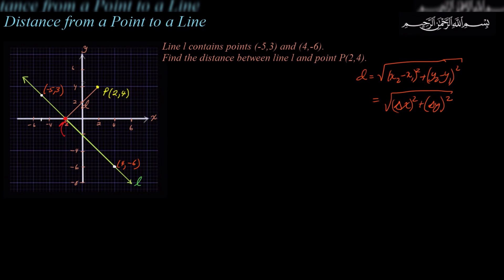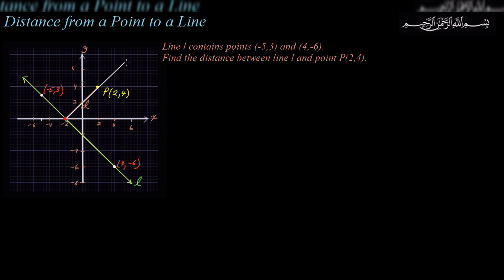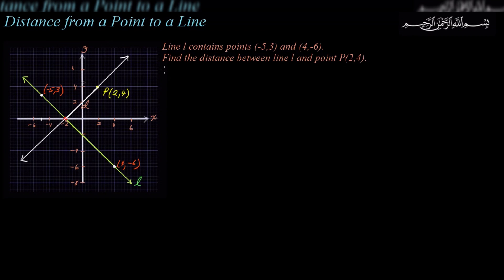That's good, but we don't know what that intersection point is. So what we're going to do is find the equation of the line that contains point P and this point of intersection. We'll find the equation of this white line W. Then we'll have two equations — for line L and line W — and we'll solve for the intersection using elimination or substitution. It's a stepwise process to go through.